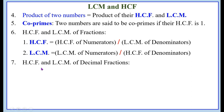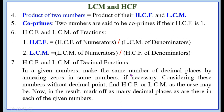HCF and LCM of decimal fractions. When given decimal fractions, make the same number of decimal places by annexing zeros where necessary. Considering these numbers without the decimal point, find the HCF or LCM as the case may be. Then in the result, mark off as many decimal places as there are in each of the given numbers.